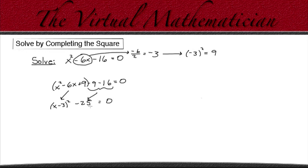Ok, so now we can start trying to solve for x. So, the first thing we need to do is add 25 to each side. And when we do that, we're going to get x minus 3 squared equals 25.